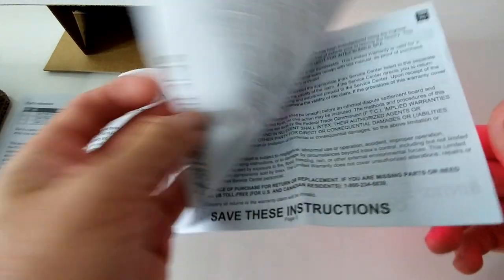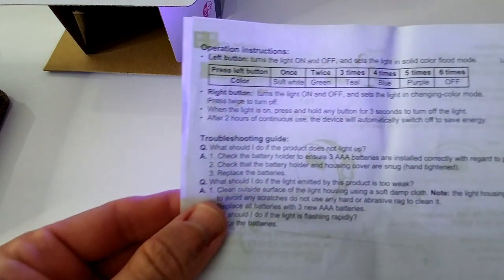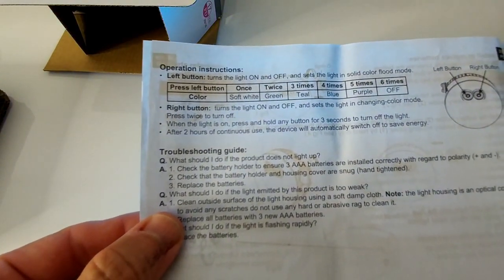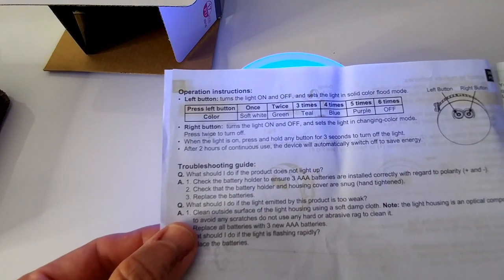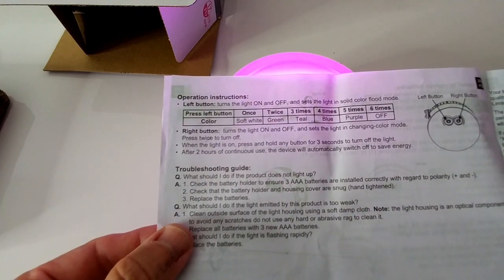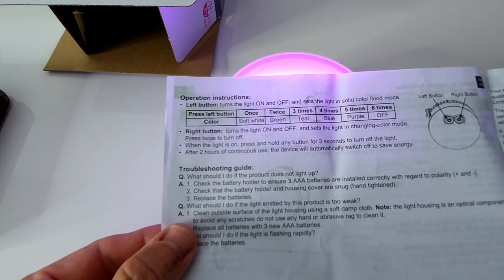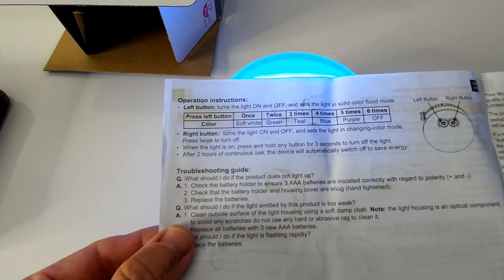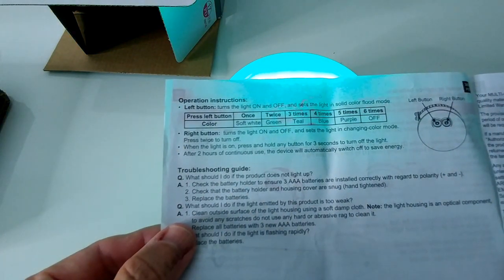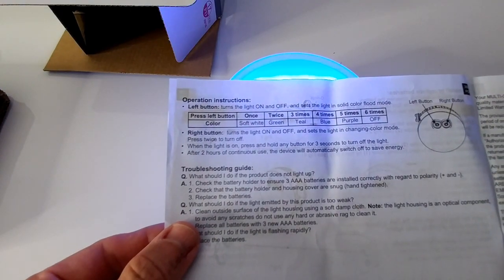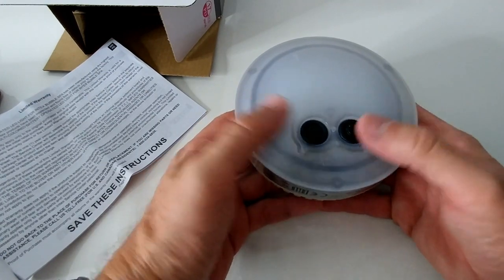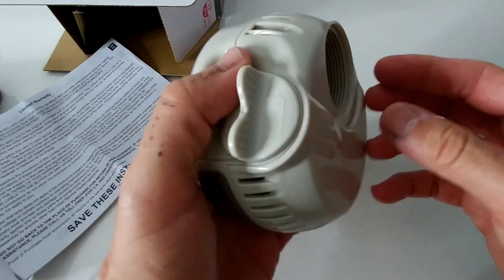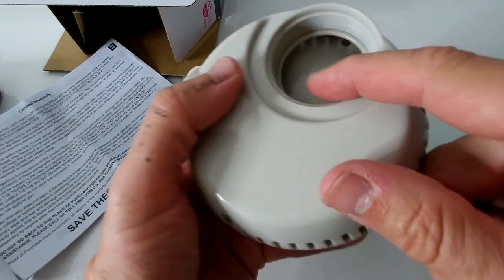The instructions say to turn the light on and off, set it in changing color modes, press twice to turn off. When the light is on, press and hold any button for three seconds to turn off. After two hours of continuous use, the device will automatically switch off to save energy, which is really nice. I didn't have to push for three seconds but anyway, it's just two buttons - you push a little bit and you'll find out how it works.